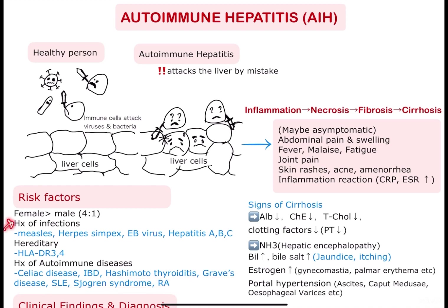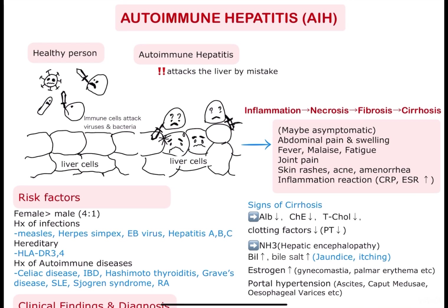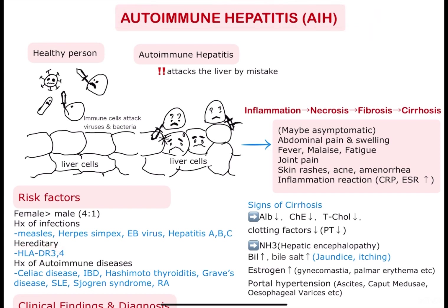Also, it is known to be associated with a history of infections, especially measles, herpes simplex, Epstein-Barr virus, and hepatitis viruses. Additionally, hereditary factors are also known to be associated with autoimmune hepatitis, especially having HLA-DR3 and DR4.